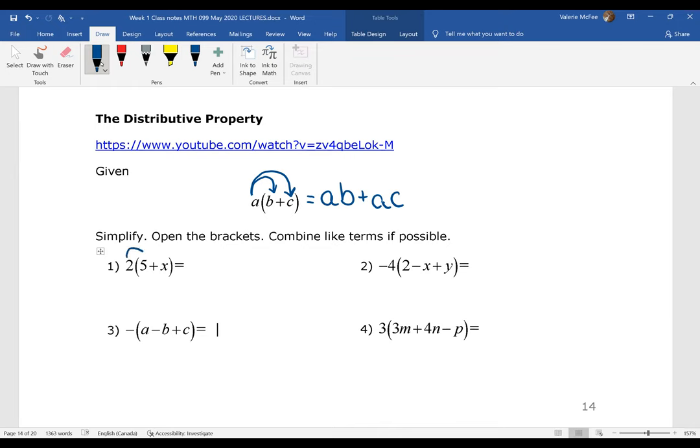So we have two times each term inside the brackets. Two times five is 10 plus two times X.